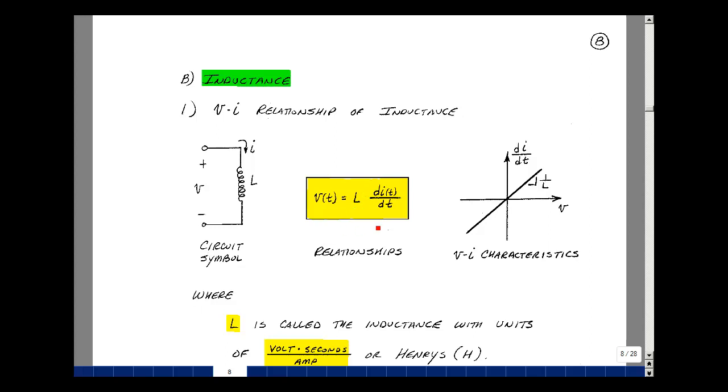I could graph this if we put voltage on the x-axis and the derivative of current on the y-axis. We get a straight line that passes through the origin, and the slope would be 1 over L. Let's put L on the other side of the equation. What would be the units of inductance?